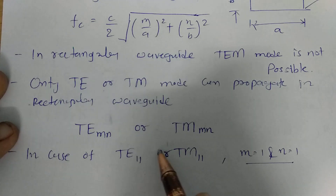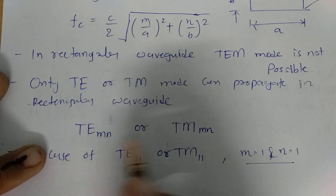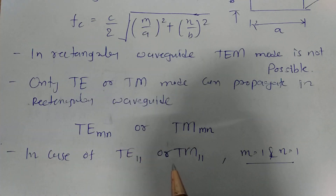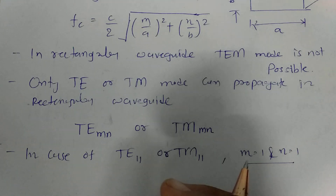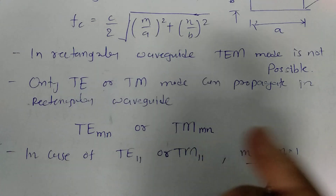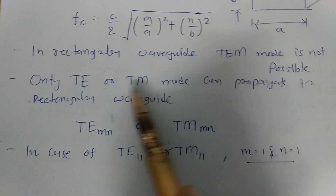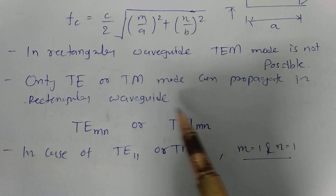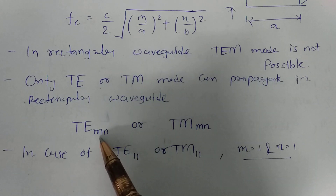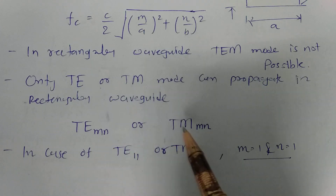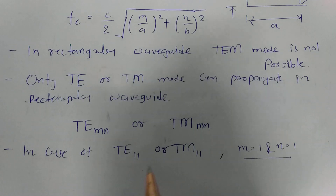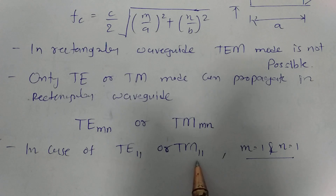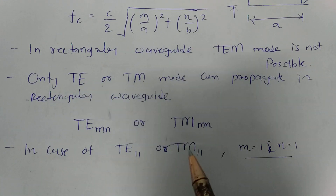Likewise, there are multiple degenerate modes possible in the rectangular waveguide where the m and n values for TE as well as TM modes are the same. These modes are degenerate modes in microwave waveguides. TE_mn and TM_mn — transverse electric and transverse magnetic modes — having the same mode indices m and n are degenerate modes. For example, TE11 and TM11 have the same cutoff frequency, so these two modes are degenerate modes.